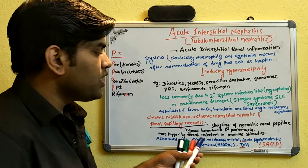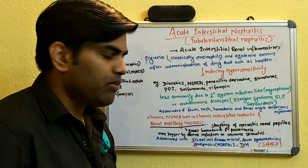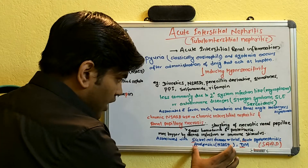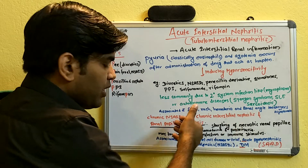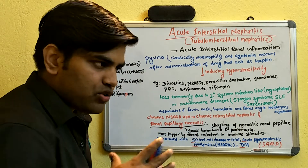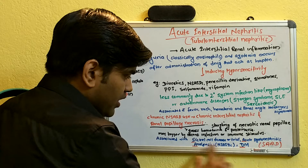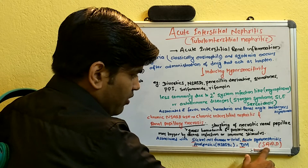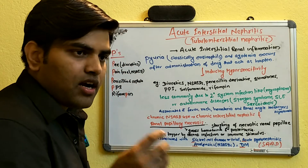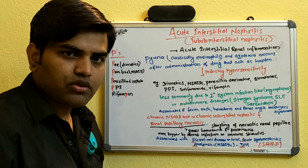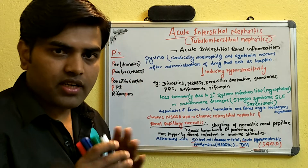Renal papillary necrosis is associated with sickle cell disease, acute pyelonephritis, chronic NSAID use (analgesic nephropathy), and diabetes mellitus. The mnemonic from First Aid is 'SAD PAPA' — Sickle cell, Analgesics/NSAIDs, Diabetes, Pyelonephritis, And Papillary necrosis. This helps you remember the associated conditions when a question presents a patient with renal papillary necrosis.